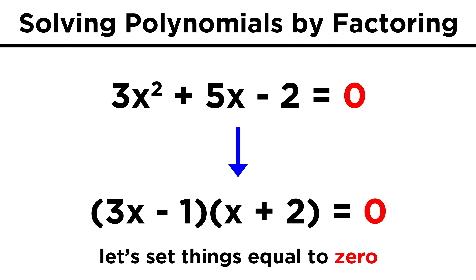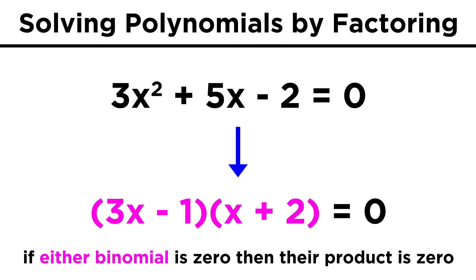If any of these polynomials had been set equal to zero, then the binomials must multiply to give zero. And we know that anything times zero is zero, so finding a value for x that will make either of these binomials equal to zero will necessarily satisfy the equation.